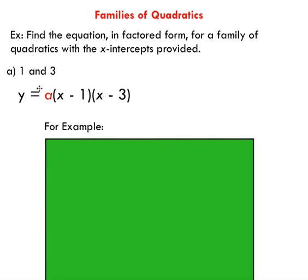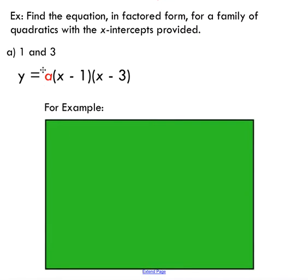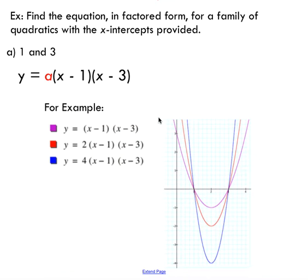So notice I don't have enough information to get this a value. If I were to just graph the family of quadratics that this expression represents, you'd see something like this. But what I did is I plugged in one for a, and you can see that's the purple graph here, passes through one and three. The red graph, I just plugged in two for a, you can see it still passes through those x-intercepts, but we've got a stretched, thinner parabola.